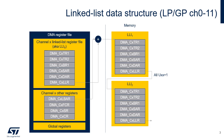The left part of the figure represents the DMA register file. The right part represents LLI 1 and LLI 2 allocated in memory. The address of LLI 1 is the sum of a base address programmed in the CX LBAR register and the offset present in the CX LLR register.